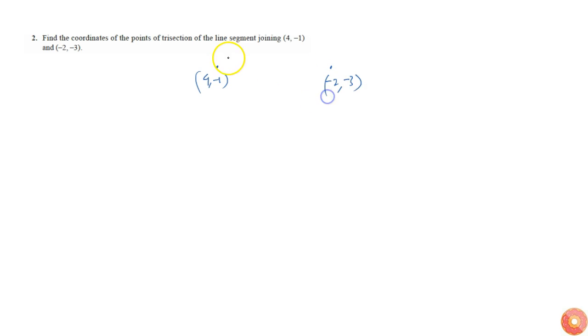So these are the two points. We need to find the points which divide this line, which are the points of trisection. Let's say this is t1 and t2, the points of trisection. That means this segment is equal to this is equal to this one.